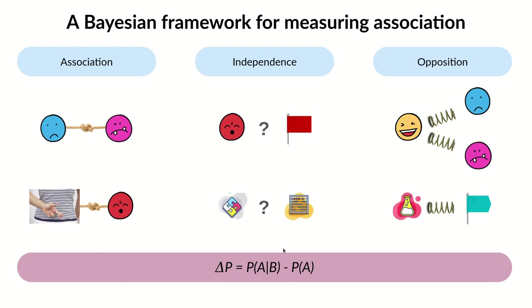This can be measured with a quantity called the added value. Associated variables have positive added values, opposed variables have negative values, and independent ones have values consistent with zero.